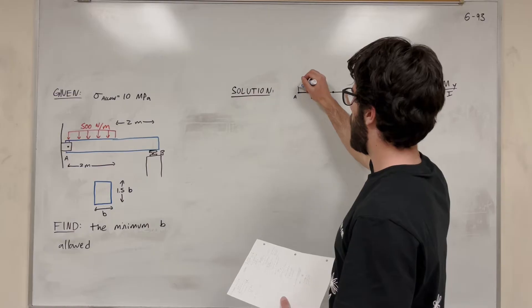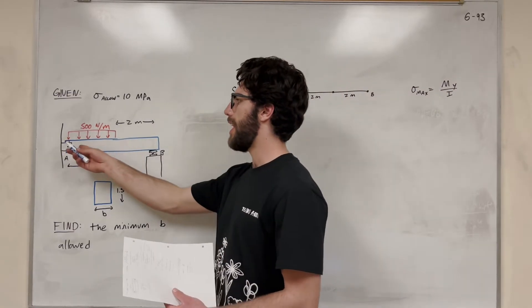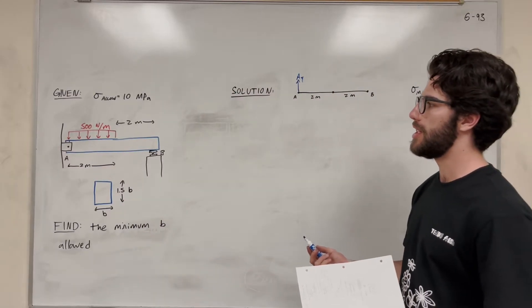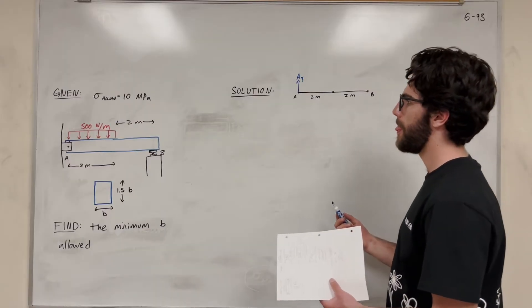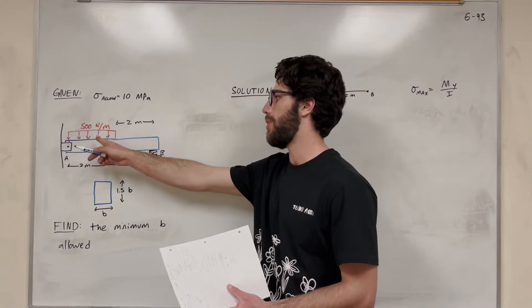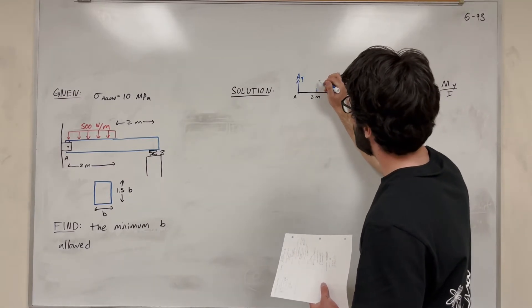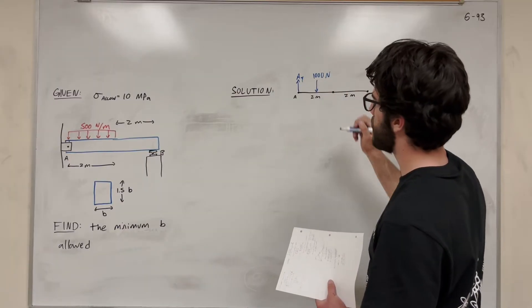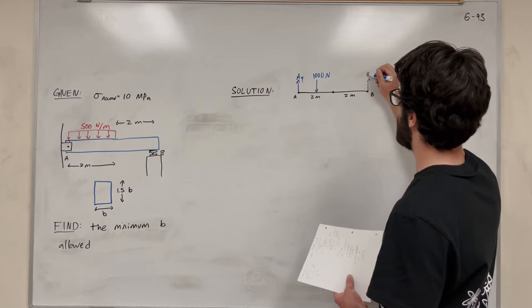We know that A will have a reaction in the Y direction and also in the X direction, but the X reaction is equal to zero since there are no other forces acting in that direction. This 500 N/m distributed force is applied over two meters, so we can represent it as a single resultant force of 1,000 N located halfway along. And then B is going to have its support reaction, B_Y.